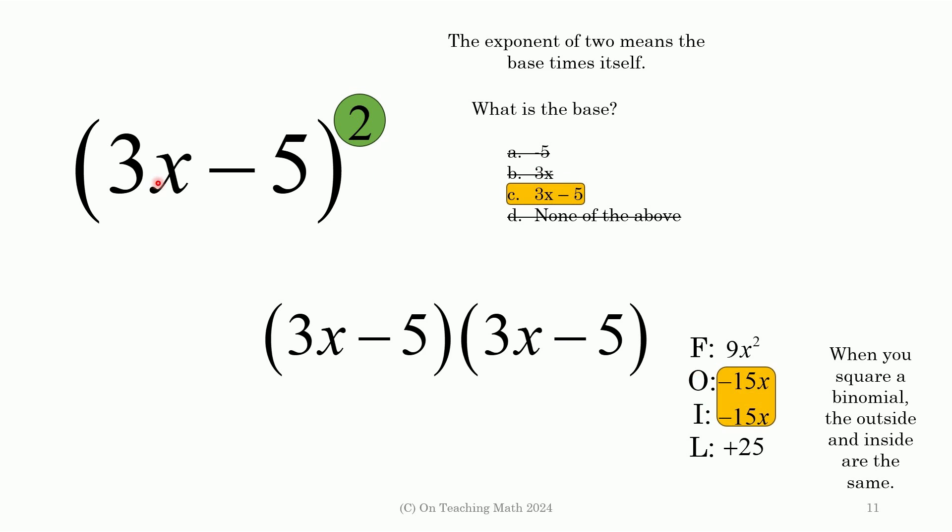Do you see the outside and the inside? They're the same. That is what always happens when you square a binomial. The outside and the inside are exactly the same. And I'm going to use that to show you a shortcut that you can use to square a binomial if you like. If you prefer FOIL and that's what you want to keep with, though, you can rock on with your bad self.